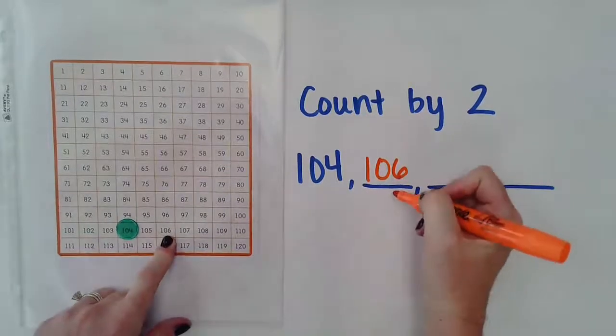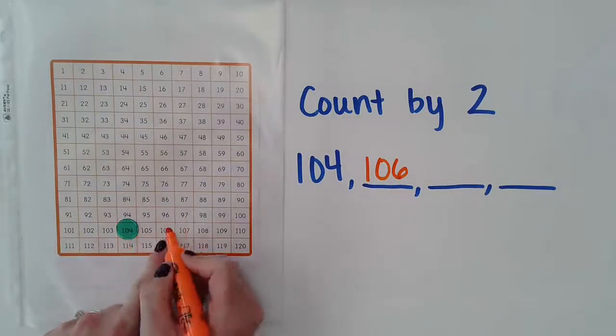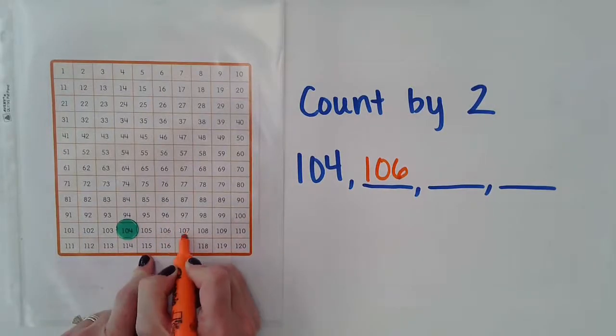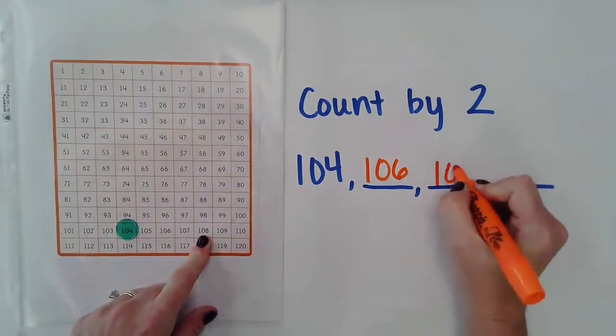From there, I'm going to count up two more. I'm not going to go back to 104. I'm going to stick with 106, and I'm going to count up by two. So one, two, which gives me 108.